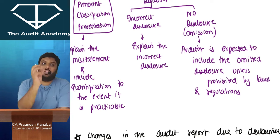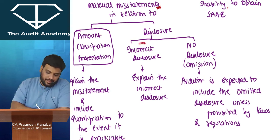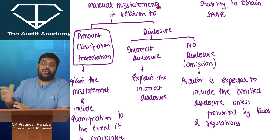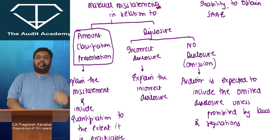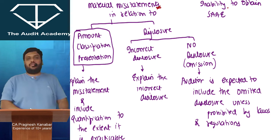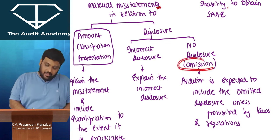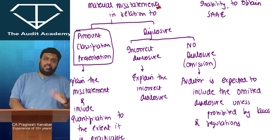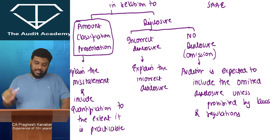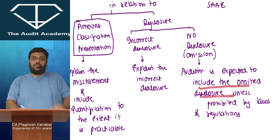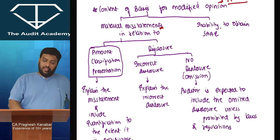If there is an incorrect disclosure — for example, management has four related parties but has omitted them from the notes to accounts as required by Ind AS 24 — you are expected to include those omitted disclosures in the basis for modified opinion paragraph, unless prohibited by laws and regulations. So you would write the names of those four related parties and include the relevant notes to accounts. This can be a very significant adjustment.